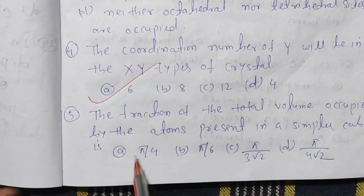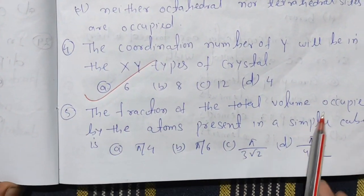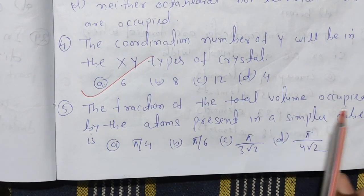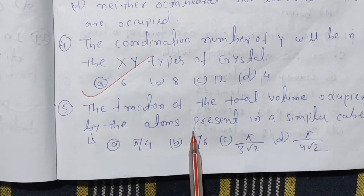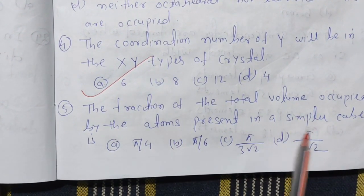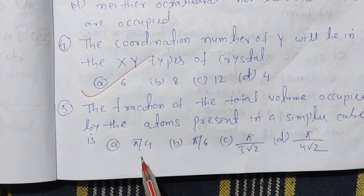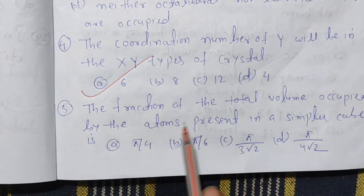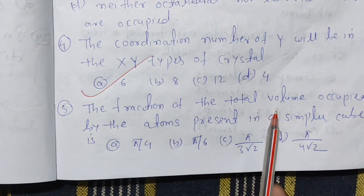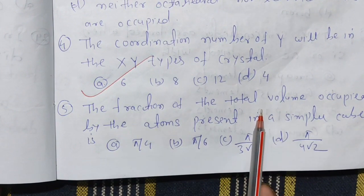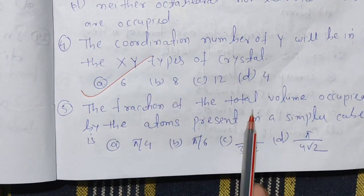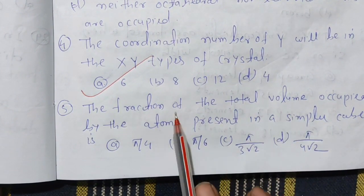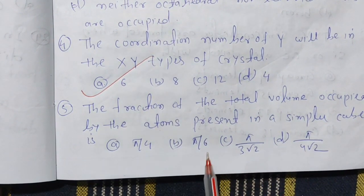The fraction of total volume occupied by atoms present in the simple cubic unit cell. Using the total volume formula for packing fraction, the answer is π/6.